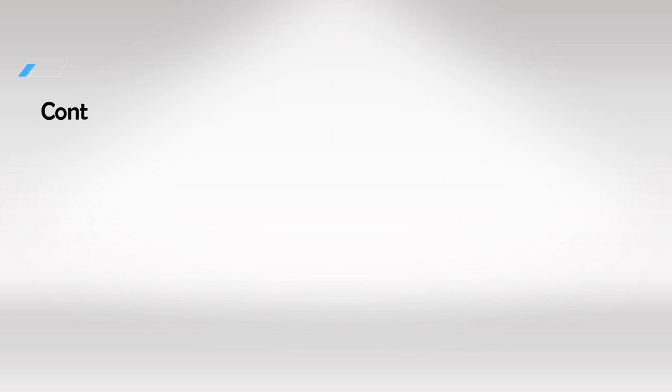Next we have intermediate insulin. This includes NPH. These preparations are normal insulin suspended in protamine and zinc. This significantly delays the absorption of insulin. So it starts working in about 2 hours and reaches the peak in 4 to 12 hours, and it lasts as long as 18 hours. So patients can control their diabetes by taking intermediate insulin twice a day.